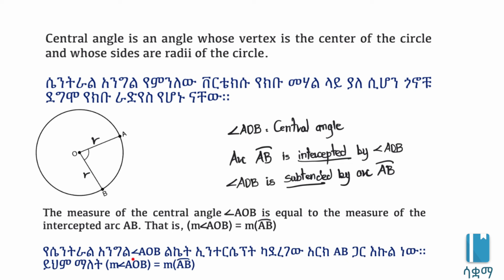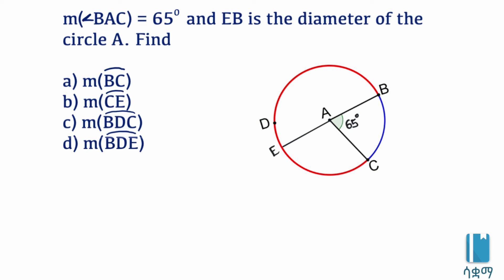The central angle AOB is equal to the measure of the arc AB. The central angle has its vertex at the center of the circle, and the sides of the central angle are the radius of the circle.